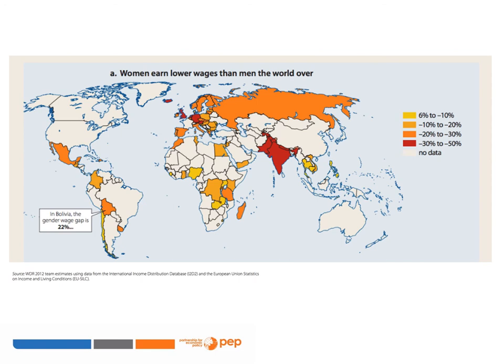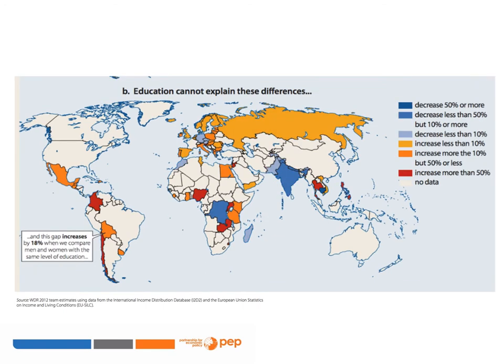These wage gaps are raw gaps — they do not control for the factors that may make men or women more productive than the other. Some argue that the reason for the wage gap is because women have smaller quantities of productivity-enhancing characteristics, like years of education. But in many countries, education cannot explain these differences and counter-intuitively increases the gap. For example, in Bolivia, controlling for education increases the gap by 18%. This suggests that men and women are rewarded differently for the same characteristics, which suggests discrimination.